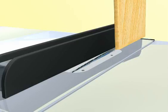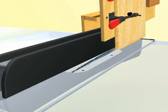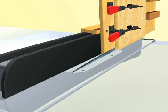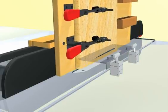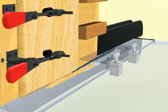Raised panels can be made by running panels vertically through the saw. To do this, a tall auxiliary fence should be used to keep the panel from tilting as it is fed through the blade.